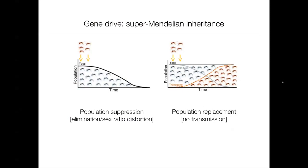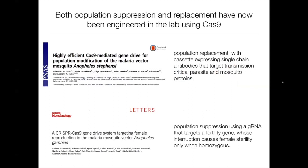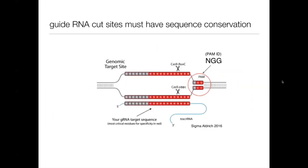The two main classes of gene drive approaches under development aim to either suppress the population by targeting a fertility gene or destroying the sex ratio, or they carry cargo that actually protects the mosquito from transmitting the parasite — called population replacement. Population suppression and population replacement are the two main areas of research right now in terms of gene drive for Anopheles mosquitoes.